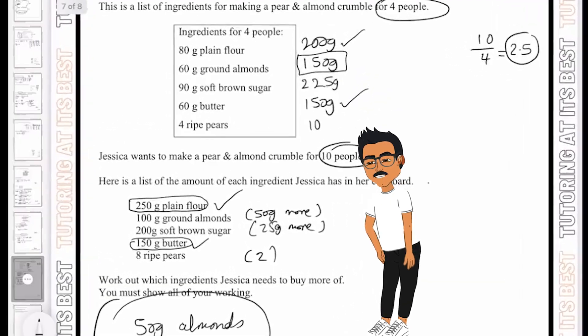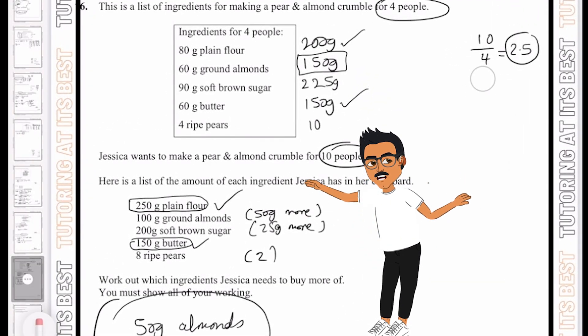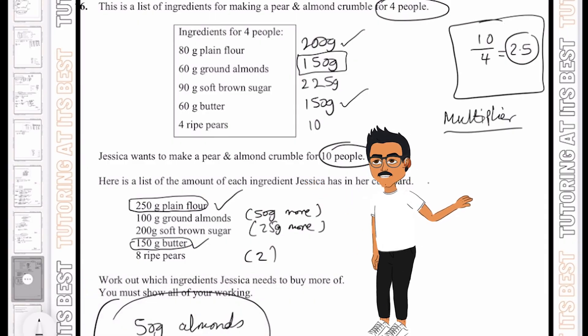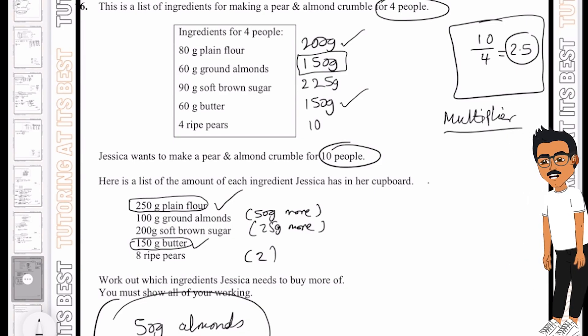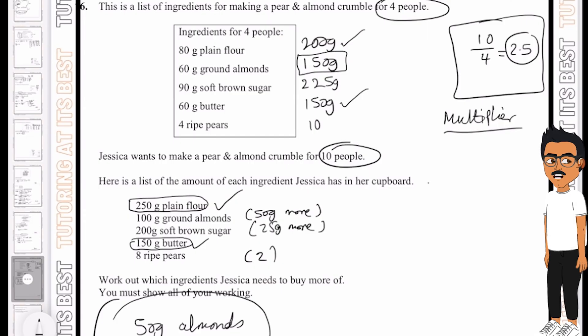So again, what have I done? I've simply gone ahead and I've found the multiplier, which is 2.5. Once I've done that, I've then multiplied all of the ingredients by 2.5, and then compared it with the ingredients that Jessica already has. I hope this question was clear.